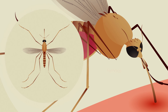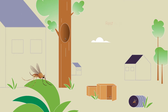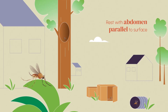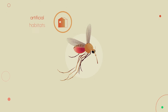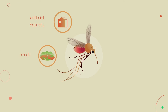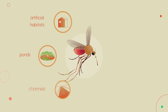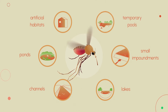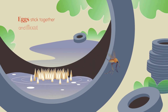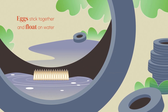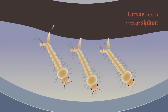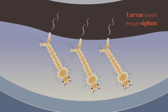Their females have short palps and rest with their abdomen more or less parallel to the surface. They prefer artificial habitats, shallow margins of ponds, channels, lakes, and small impoundments. They can also be found in temporary pools. Their eggs stick together and float on the water. Culex larvae have a siphon to breathe and hang upside down from the water surface.